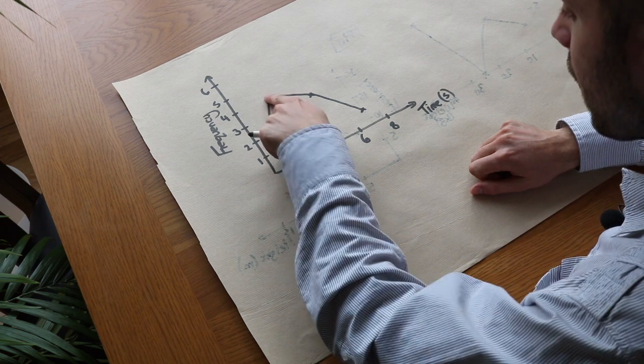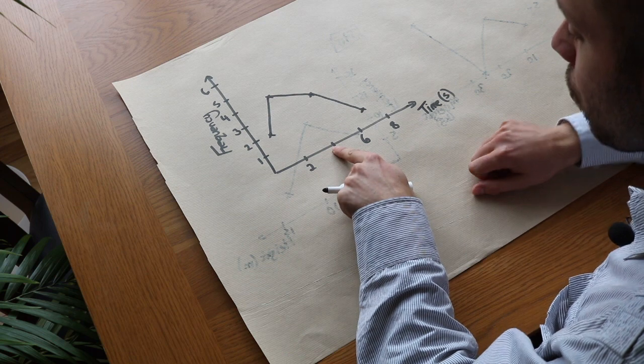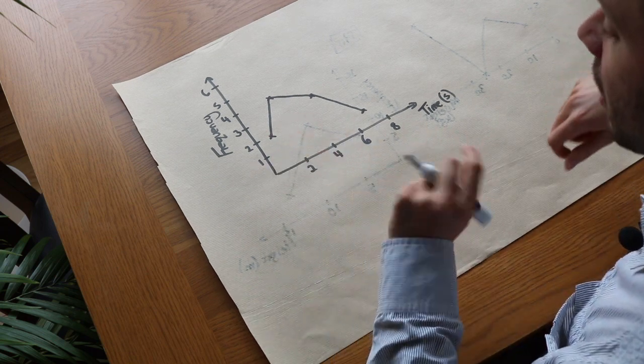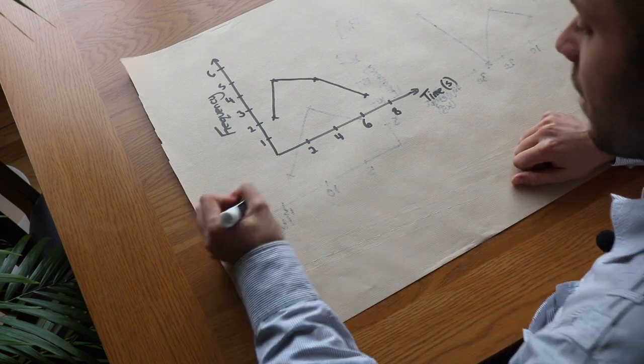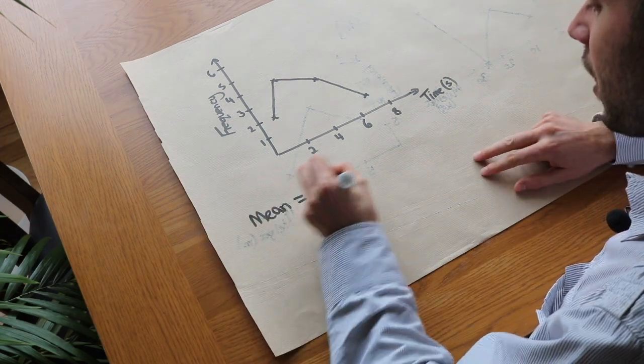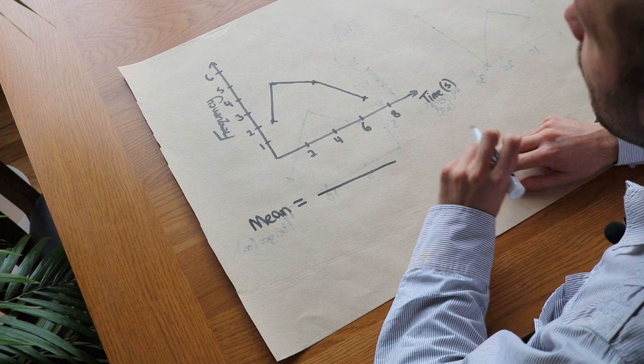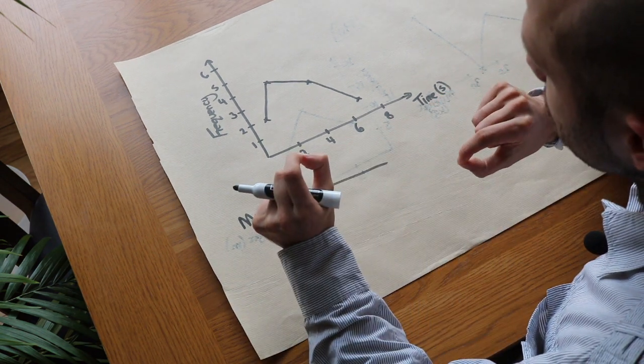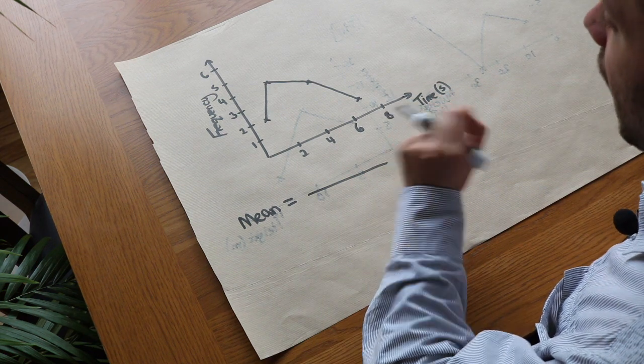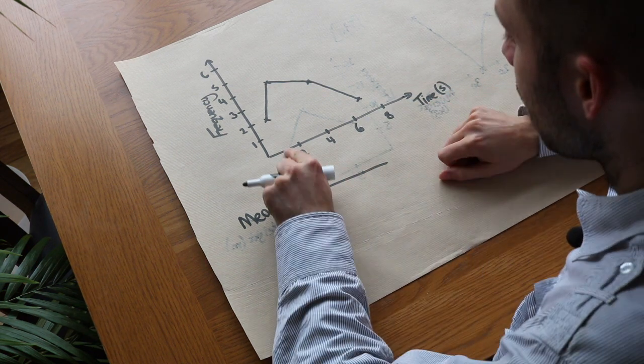But can you see that point there is halfway between zero and two seconds, that point there is halfway between two and four, etc—so these are the midpoints. But do you remember how we found the mean of a group frequency table? Do you remember that we need to find firstly an estimate of the total time, and to find an estimate of the total time we did each midpoint of the interval times by the frequency and added all those together.